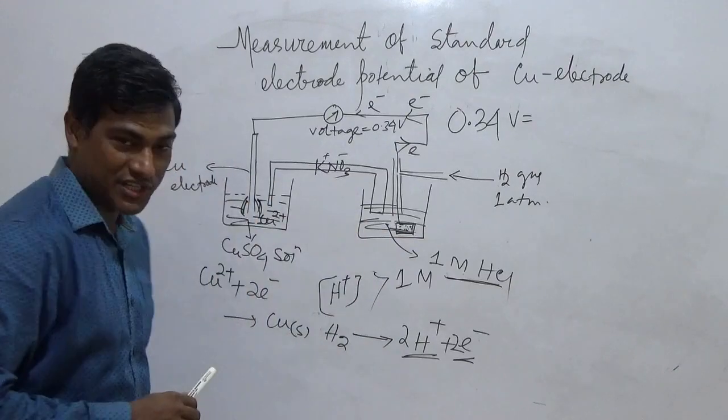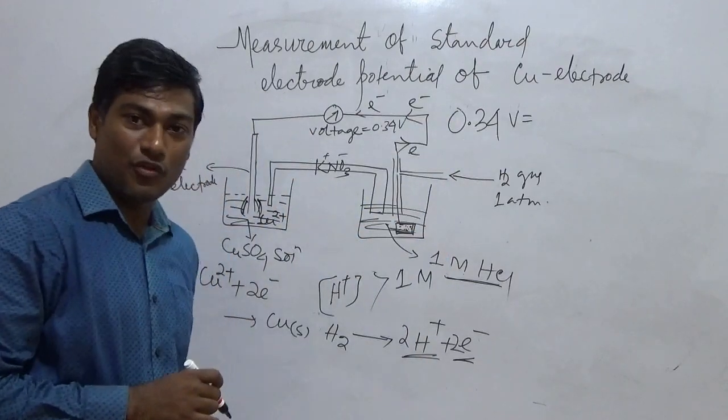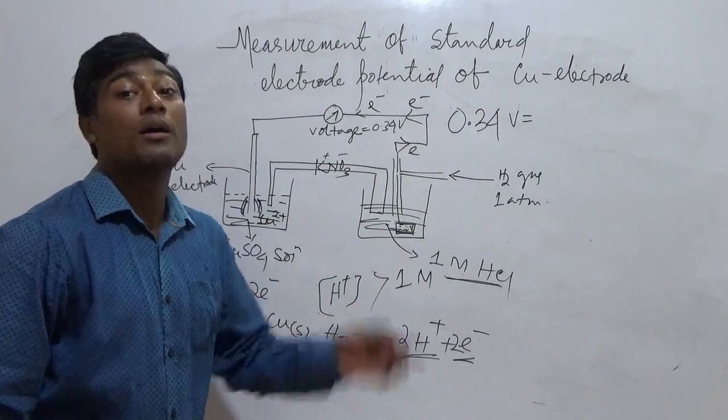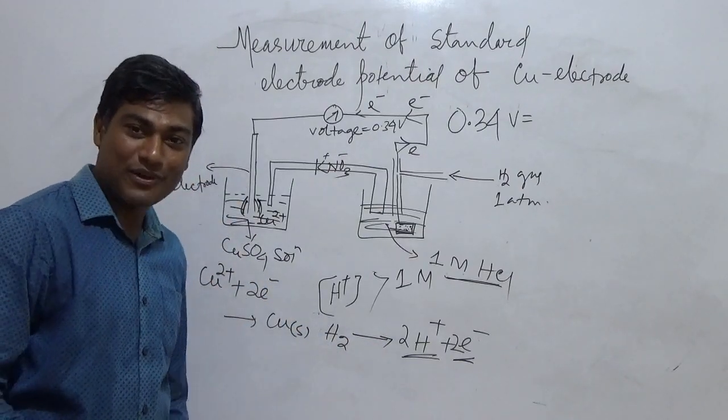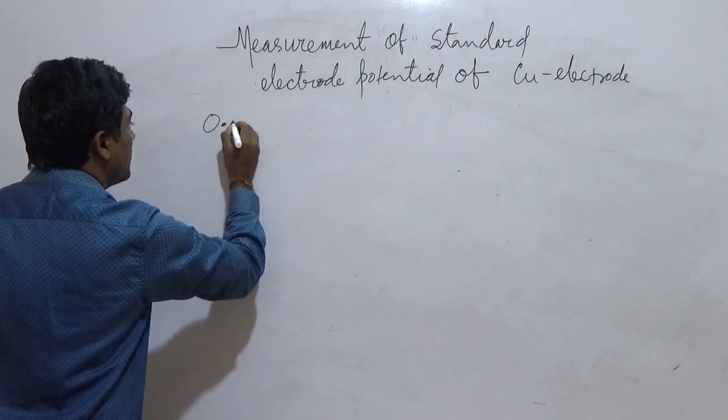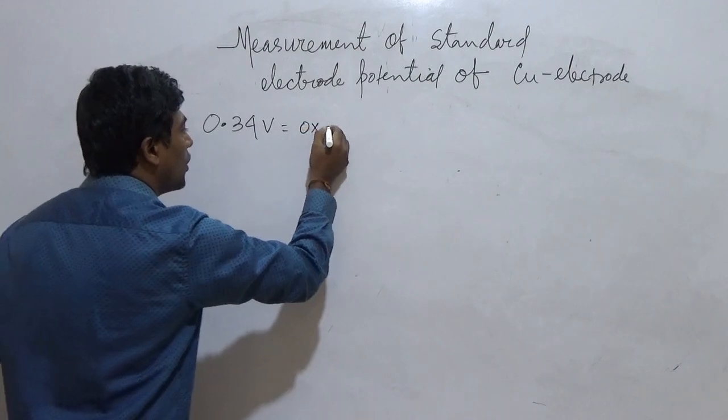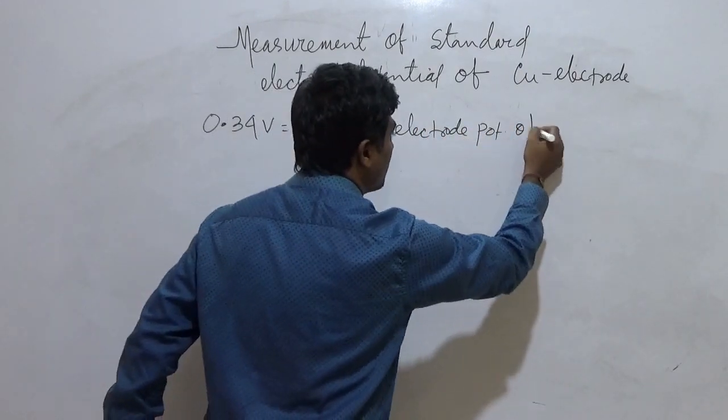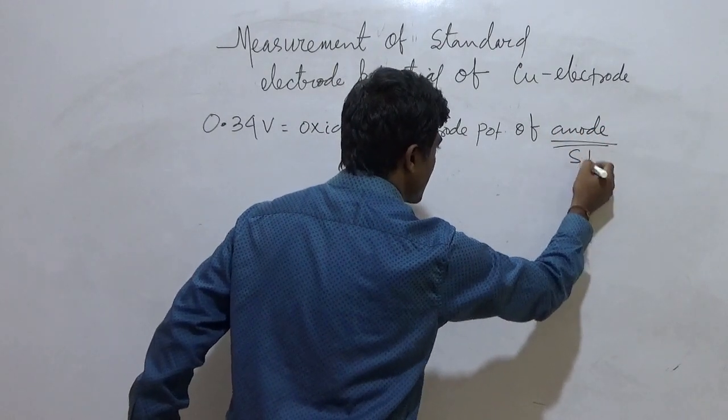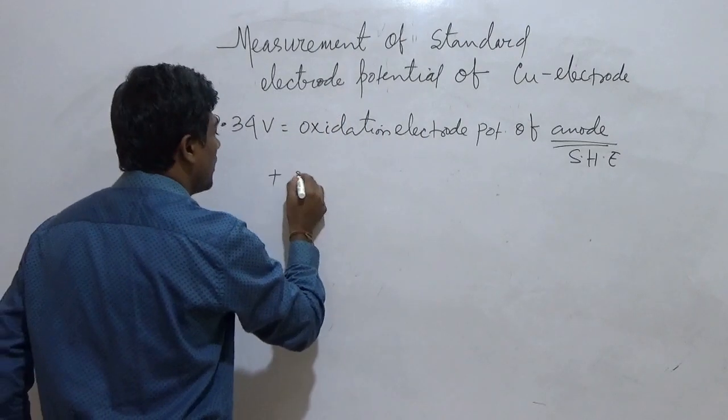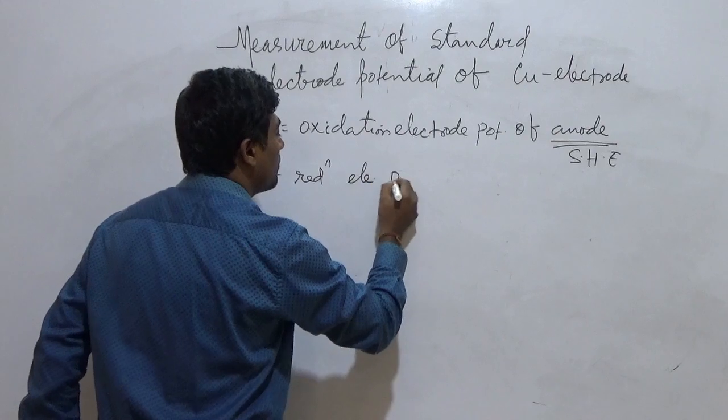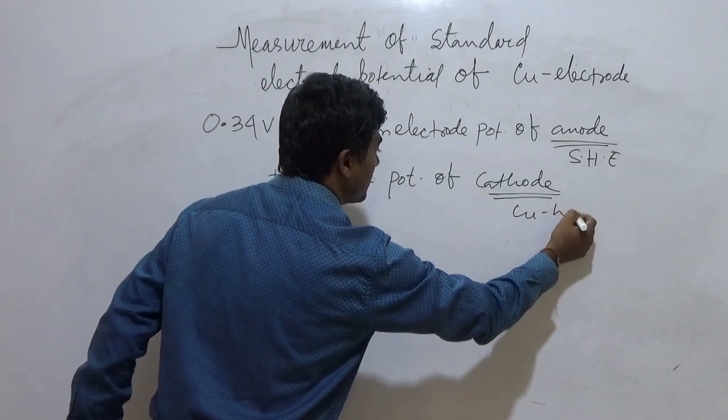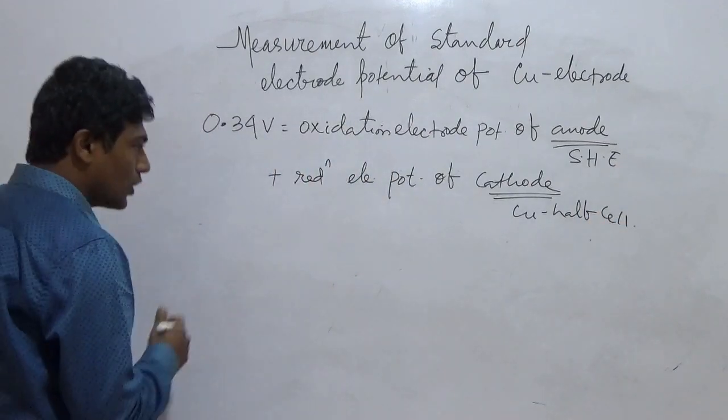And oxidation takes place here. So this steady voltage 0.34 volt should be equal to the oxidation electrode potential of SHE which is conventionally taken as 0 plus the reduction electrode potential of copper. So we will write down. 0.34 volt is equal to the oxidation electrode potential of anode. Here there is SHE where oxidation takes place plus the reduction electrode potential of the cathode. Here the cathode where the reduction takes place is the copper half cell. Of the copper electrode.